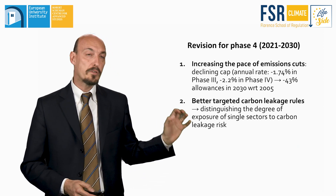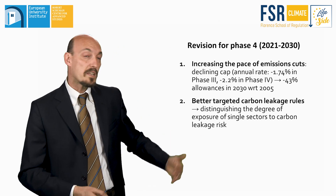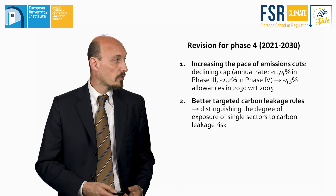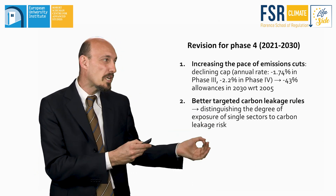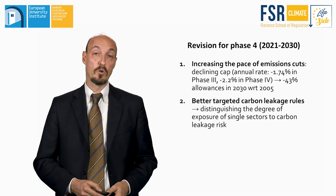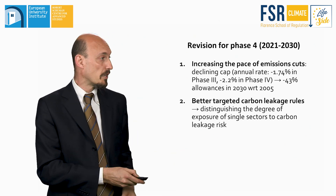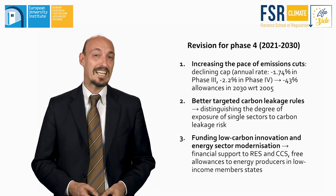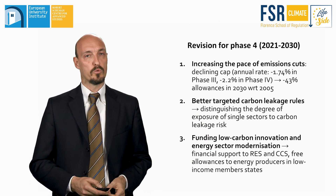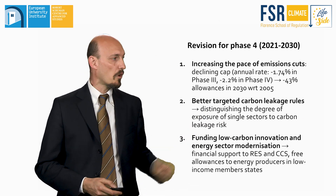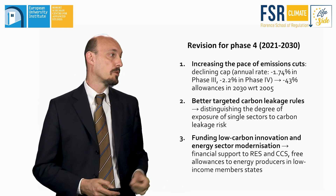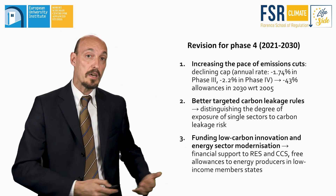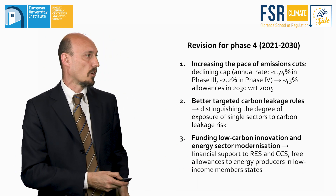Secondly, better-targeted carbon leakage rules, which reduce the number of sectors at risk of carbon leakage exempted from auctions and also distinguish the degree of exposure in those sectors to carbon leakage risk. Third, funding low-carbon innovation and energy sector modernization — providing financial support to renewables and carbon capture and storage, and providing free allowances to energy producers in low-income member states to help facilitate the energy transition towards cleaner technologies.